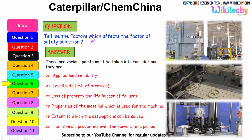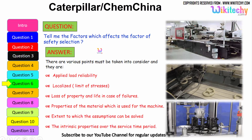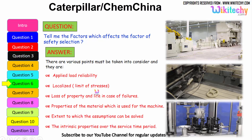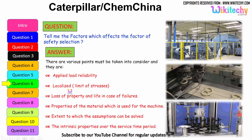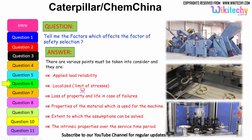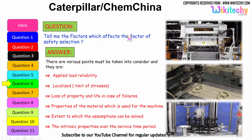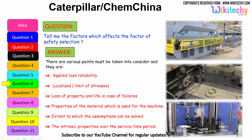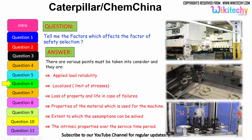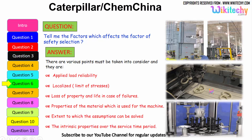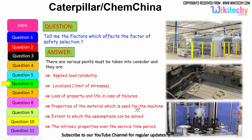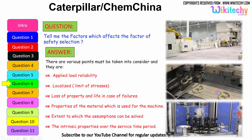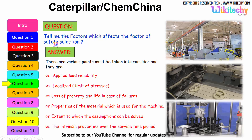Let us see the factors which affect the factor of safety selection. These include: applied load reliability, limit of stress localized, loss of property and life in case of failures, properties of the material used for the machine, the extent to which the assumptions can be solved, and the intrinsic property over the service time period — how it will sustain everything we need for factor of safety selection.